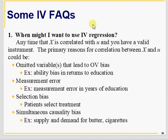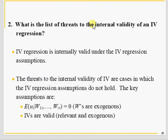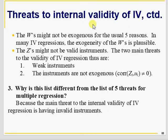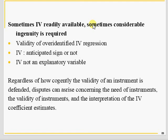Omitted variable bias, measurement error, selection bias, and simultaneous causality bias — all these threats to the IV assumptions have been discussed. Finally, whatever you do, there will always be criticism and your instruments may be disputed. The validity of instruments and interpretation of instrumental variable estimates must be done with great care, and instrumental variables should not be exploitative. Watching videos 29 through 35 will give you a reasonable understanding of IV; for advanced study, I recommend William Greene's Econometric Analysis.